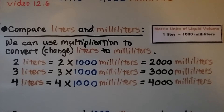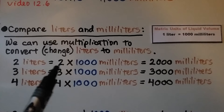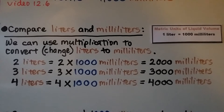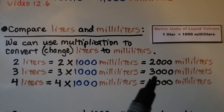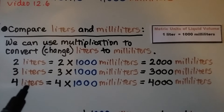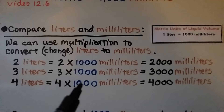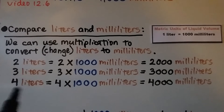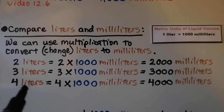To compare liters and milliliters, we use multiplication to convert liters to milliliters. One liter equals 1,000 milliliters. Two liters is 2,000 milliliters, three liters is 3,000 milliliters, and four liters is 4,000 milliliters. Using multiplication, we can find the milliliters for any number of liters — for example, 99 liters would be 99,000 milliliters.